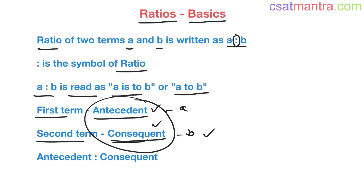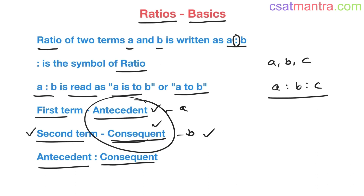So consequent is the second term. A ratio is basically antecedent is to consequent. If you have three terms or three quantities A, B, C and their ratio A is to B is to C, in that case you don't use these terms antecedent and consequent.